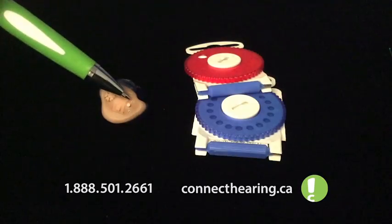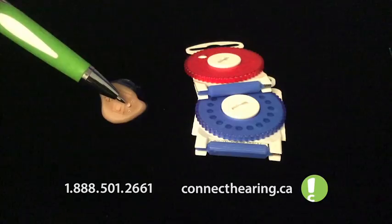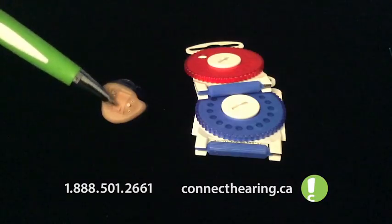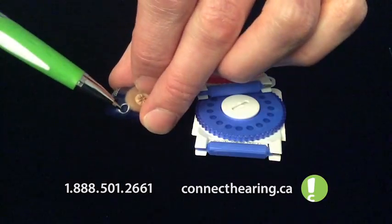On this hearing aid, we've got our front microphone, our back microphone, we have a push button for selecting different programs, our battery compartment, and our volume control wheel here. Over on this side, we have the air vent.